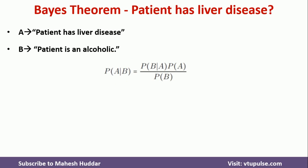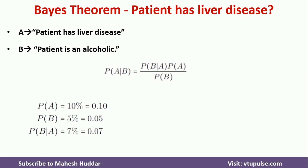We will write down what is given to us. There are three pieces of information: P(A), the probability the patient has liver disease, is 10%. P(B), the probability the patient is alcoholic, is 5%. And P(B|A), the probability that the patient is alcoholic given liver disease, is 7%.